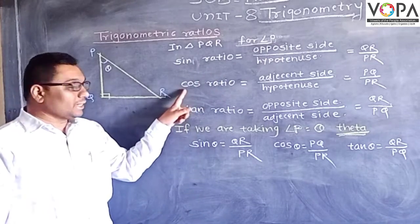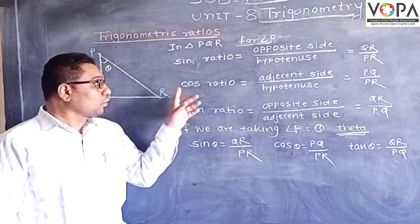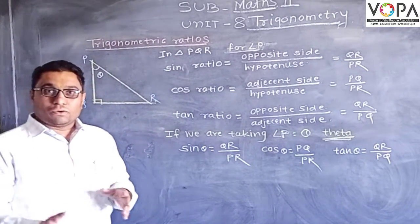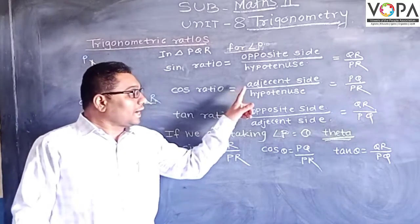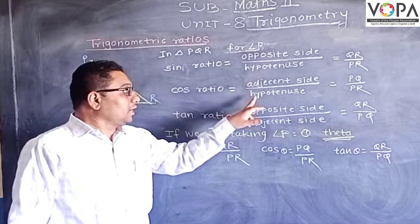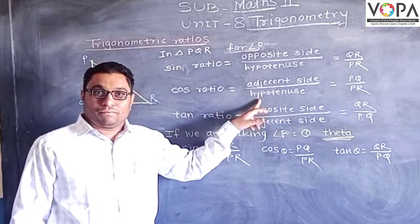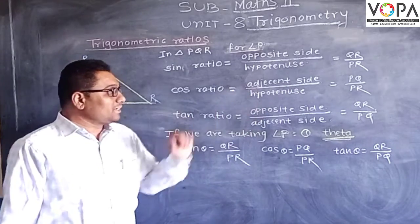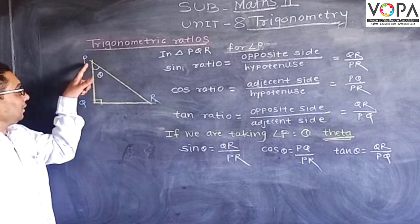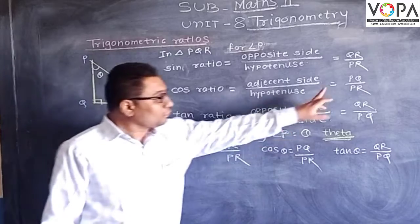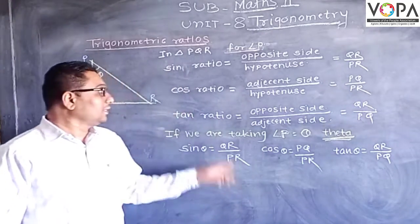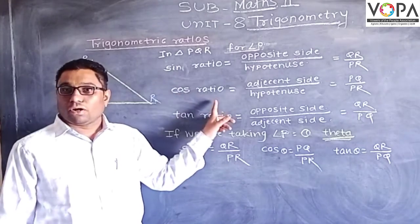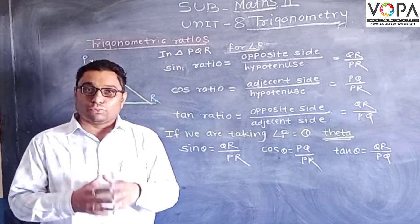Now the second ratio is the cosine ratio. What is the cosine ratio? The cosine ratio is adjacent side upon hypotenuse. Which is the adjacent side for angle P? This is PQ. So PQ upon PR - this ratio is called the cosine ratio.